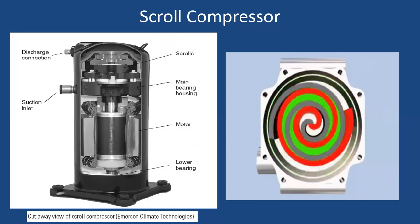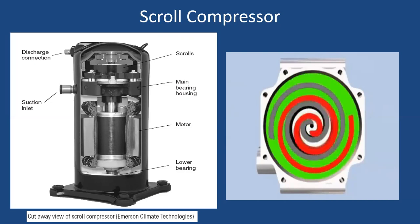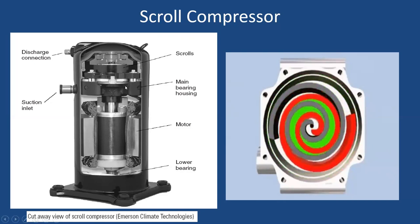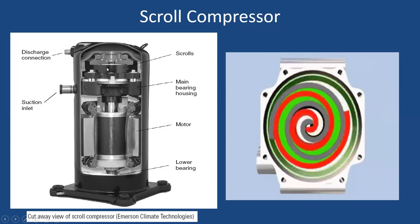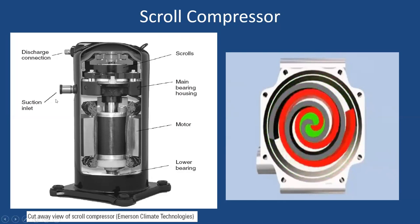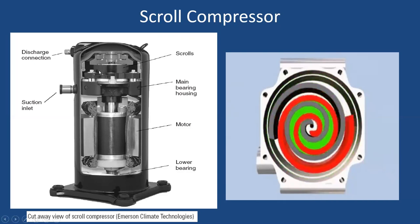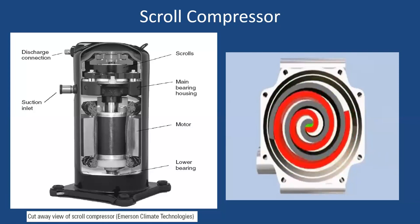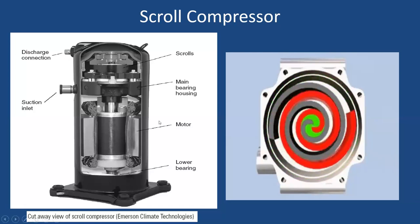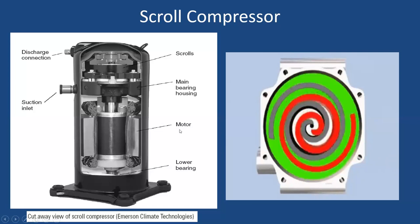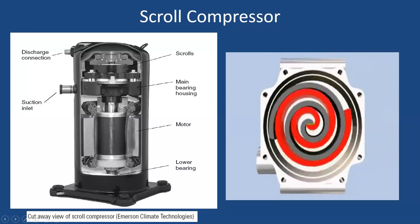Scroll compressors are generally available in hermetically sealed units only — they are not available in open-type or semi-hermetic configurations. The typical construction includes scroll members, the main bearing part, and motor components. One scroll member is fixed while the other orbits inside it, causing compression by trapping refrigerant between them, which is then delivered from the discharge line.